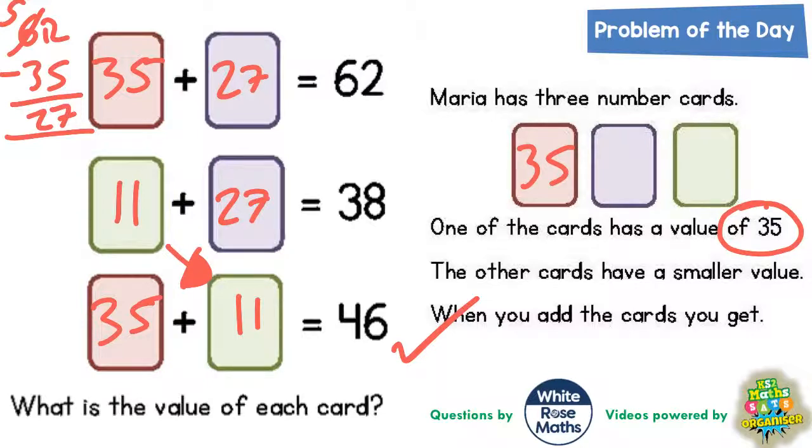So it looks like it is the red one which is actually 35, because 35 plus 27 is 62, 11 plus 27 is 38, and 35 plus 11 is 46. So there we have the value of our cards.